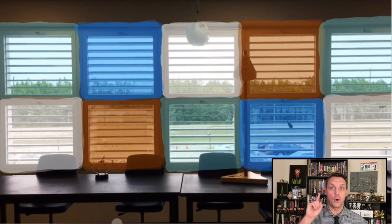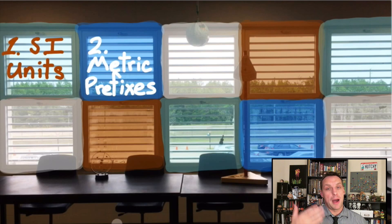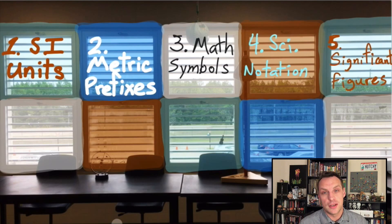These nine skills are: number one, the correct SI units have to go into your equation; two, in the metric system, the prefixes - what do they mean, what power of ten do they stand for; three, you need to know what the math symbols mean; four, scientific notation; number five, significant figures, also known as significant digits.